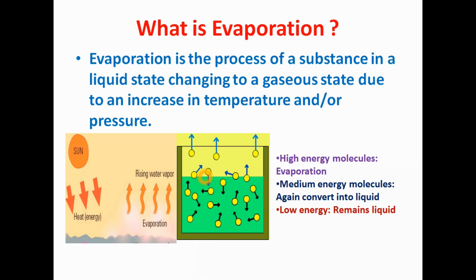This water has some molecules. The molecules which are present on the surface of the water receive energy from the atmosphere. Due to receiving energy from the atmosphere, they become excited and get converted into vapor form from the liquid form. Initially they are in liquid form on the surface, but when they receive heat energy from the atmosphere, they get converted into vapor form. This phenomenon is known as Evaporation. When the energy of these molecules gets reduced, they get converted back into liquid form, and this phenomenon is known as Condensation.